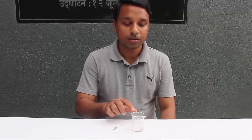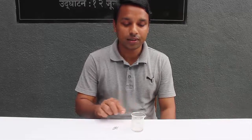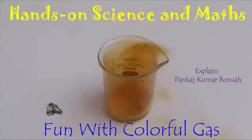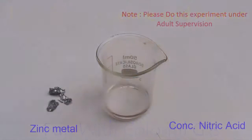For this we will need two chemicals: one is concentrated nitric acid which is in the beaker and a few pieces of zinc metal.